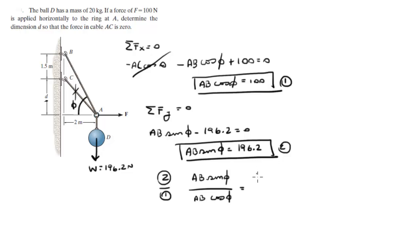Over 100, so AB cancels out. Sin of phi over cosine of phi is tangent of phi, and this is equal to 1.962. So when you solve for phi, you get phi is equal to 63 degrees.